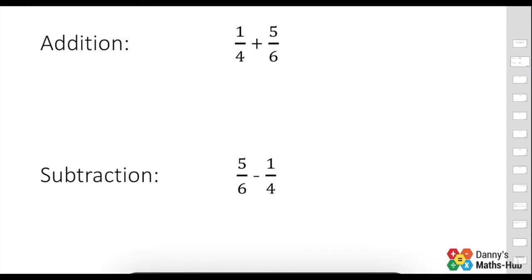The quickest and easiest way to find a common denominator is by multiplying our two current denominators together. So if we do that, 4 times 6 is 24. So we know our common denominator is going to be 24.